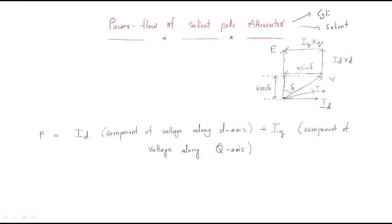Just look at the salient pole alternator phasor diagram. V is the output voltage, V is the load voltage. For some phase angle phi, armature current will be developed. This is the load current. Armature current will be divided into two parts: one is the direct axis current and another one is the quadrature axis current. This is the quadrature axis current iq. E means open circuit voltage — the voltage developed across the armature open circuit terminals without load.